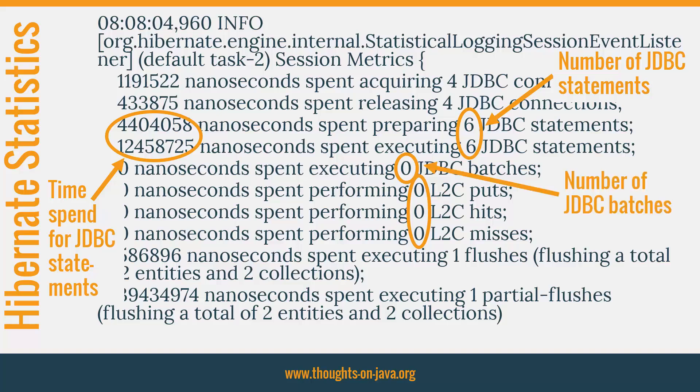JDBC batching is deactivated by default and this number will therefore be 0 on most systems. I explain the benefits of JDBC batching in module 16, and if you decide to activate it, you should have a look at this number to see how efficiently Hibernate can use the batches.